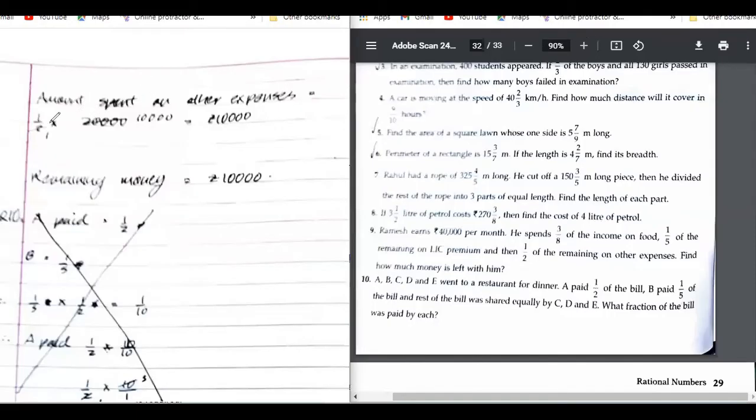So other expenditure was what? Half of remaining, this is half of remaining, 20,000 divided by 2, 10,000. So remaining money is 10,000 rupees.